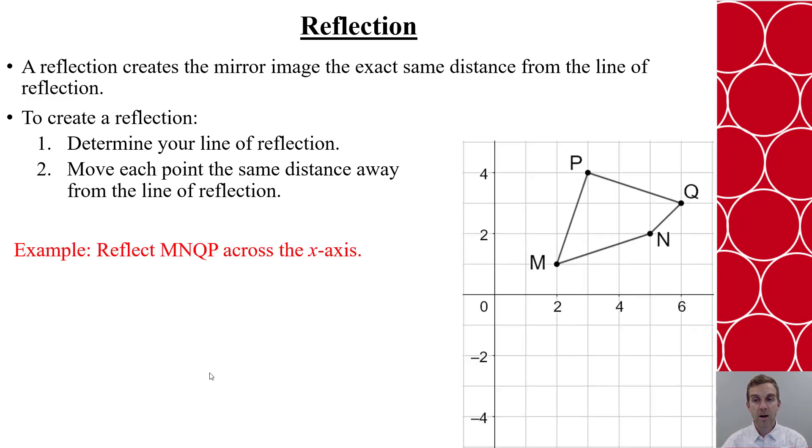So say we have quadrilateral MNQP, and we're going to reflect it across the x-axis. So we're going to reflect it, which means we're now going to go across and create that mirror image. So let's take this one point at a time.